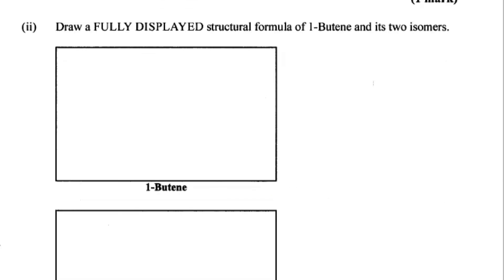Part two of B: draw a fully displayed structural formula of one-butene and its two isomers. So the '1' in one-butene is telling us that the functional group, which is our carbon-carbon double bond, is going to be found at the first carbon. Naturally we read from left to right, so I'll put the carbon-carbon double bond at the first one from the left.